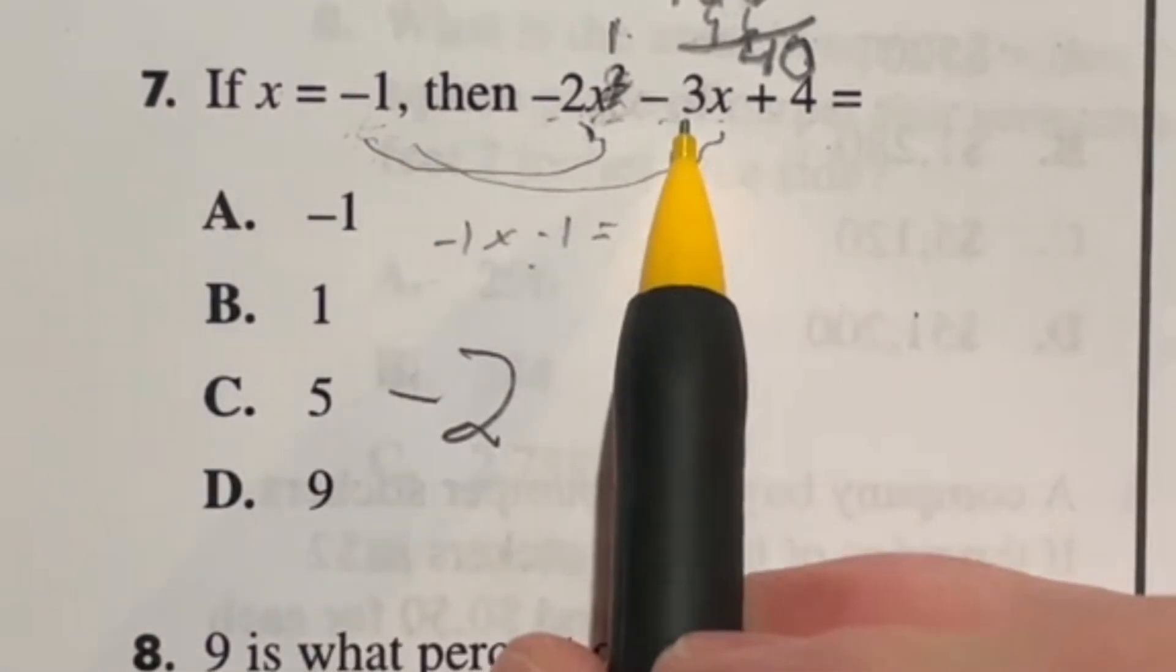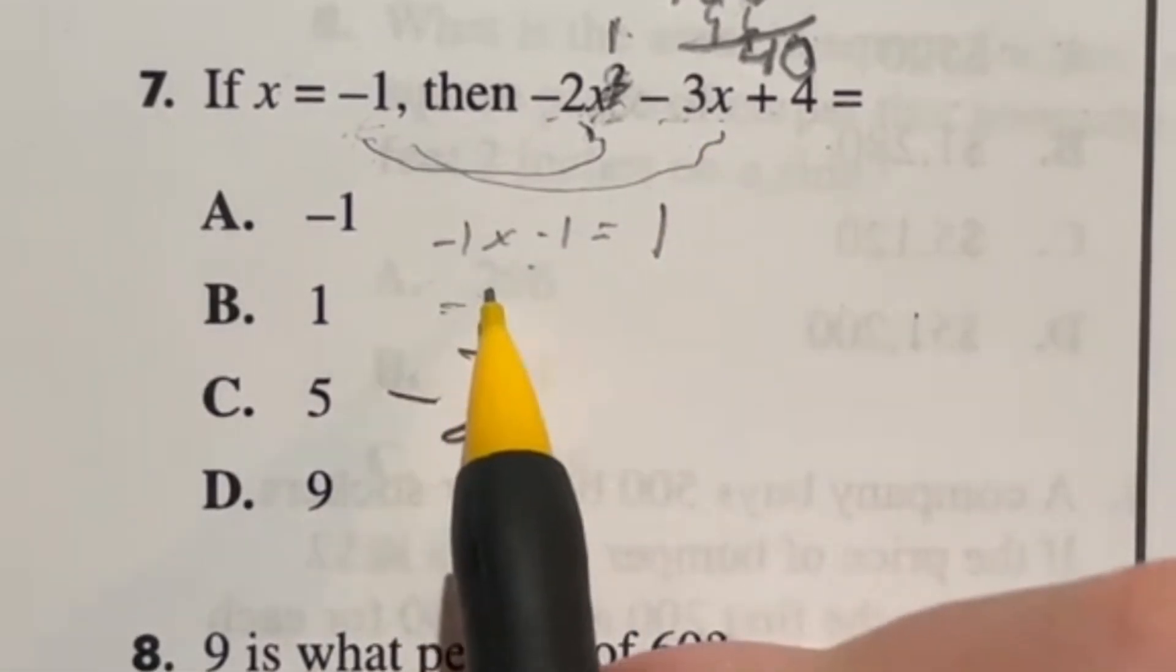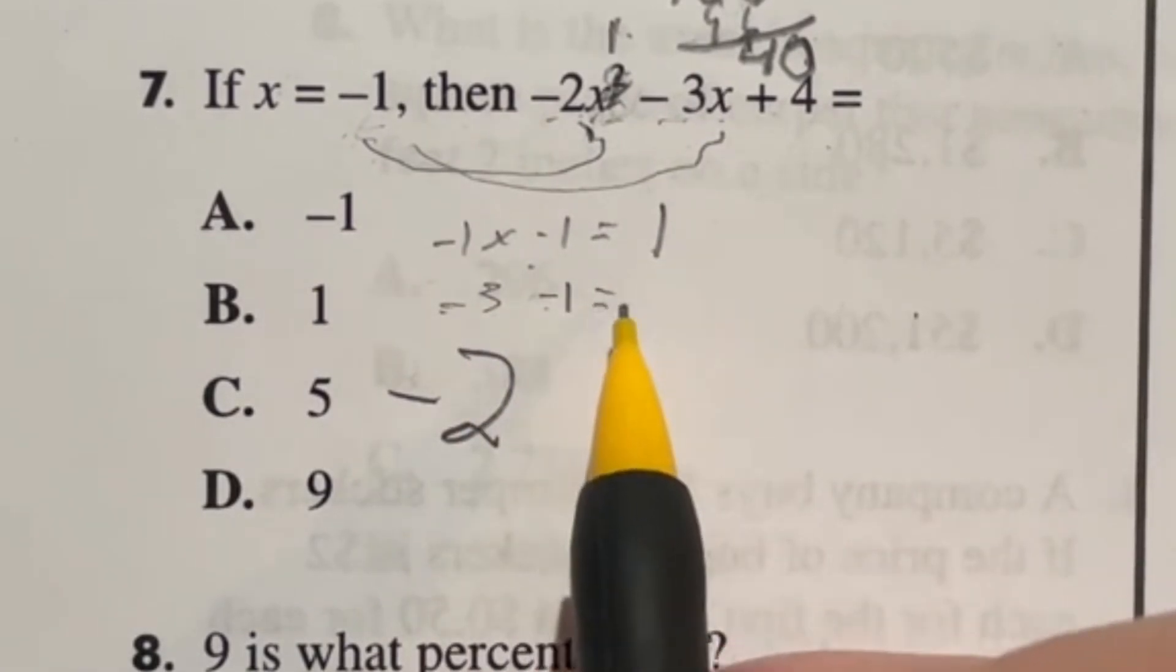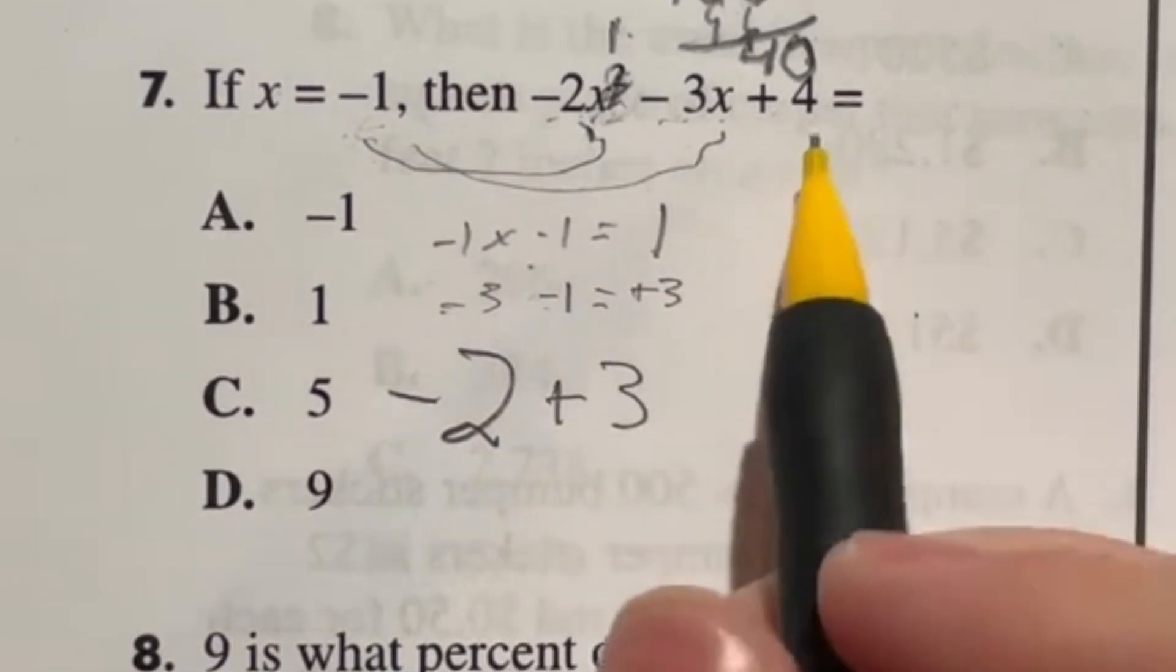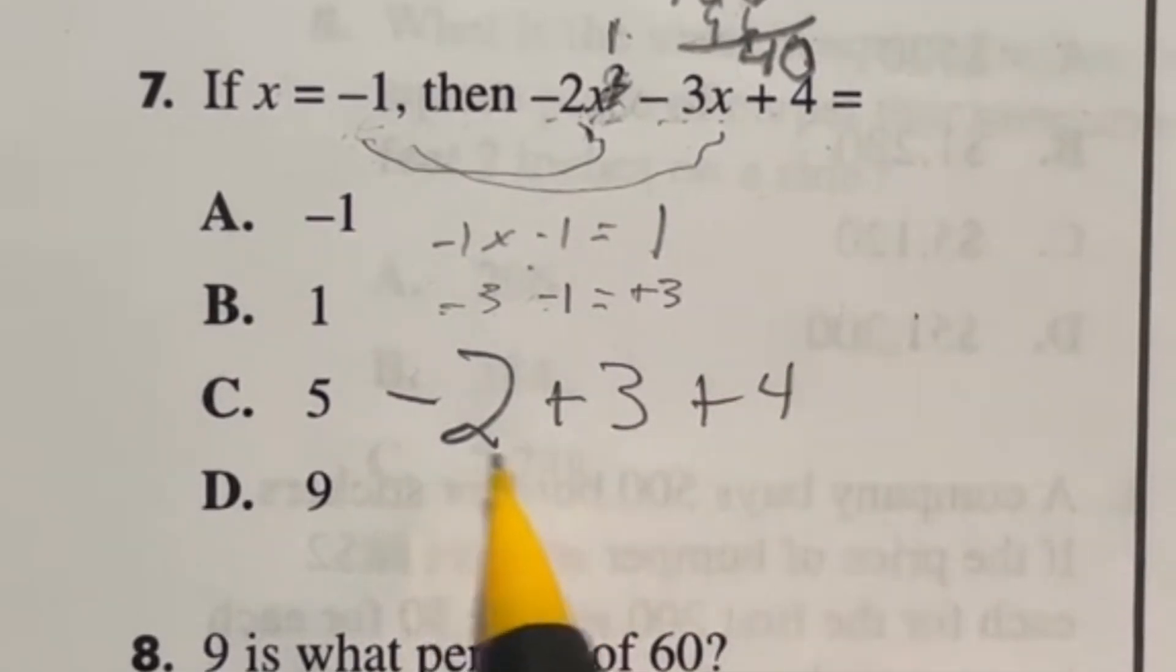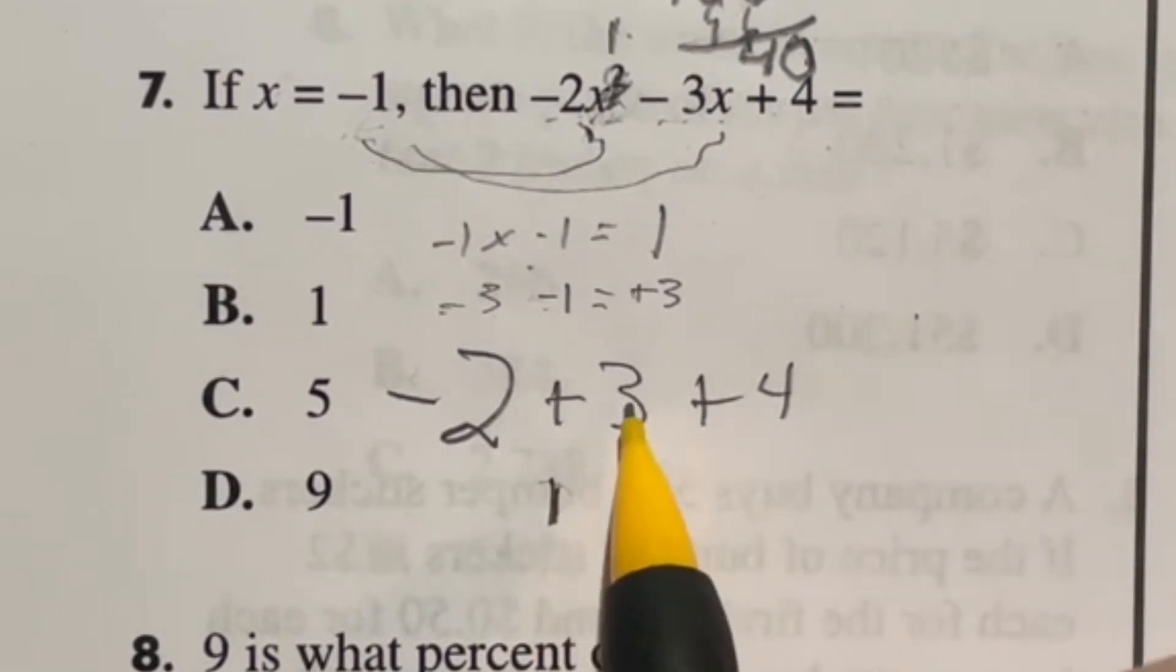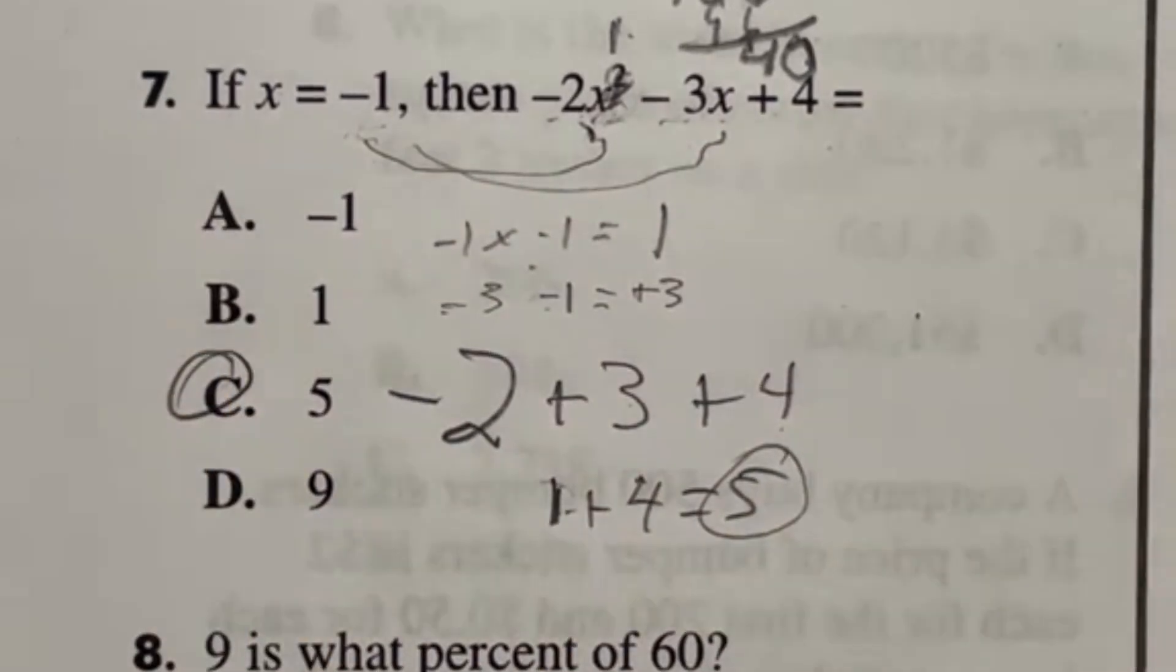In our case, we have negative one. So negative three times negative one. Well, we just said that a negative times a negative is going to give me a positive. So negative three times negative one is going to give me a positive number. And three times one is just three. So in this case, we have plus 3. Now this 4 doesn't have an x term with it so it's just going to stay 4 so plus 4. So negative 2 plus 3 is going to give me a positive 1 because it's really just like 3 minus 2 and then 1 plus the 4 is going to give me 5. So our final answer here should be 5 which is answer C.